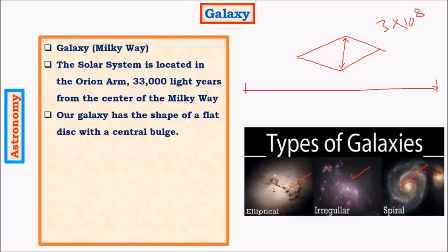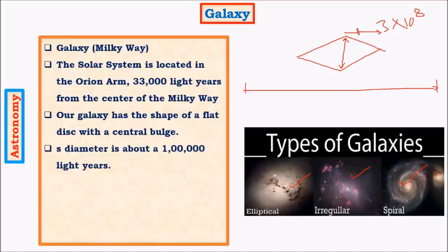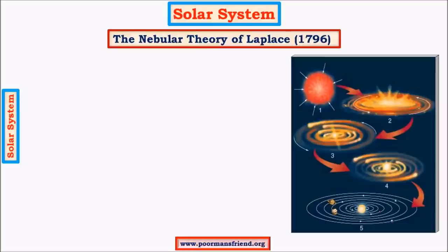The sun is located at about one-third from the center of the Milky Way — the diameter is about 1 lakh light years and the sun is at a distance of about 33,000 light years from the center. In the next topic we will see about the solar system, and the first important topic will be the Nebula theory of Laplace.